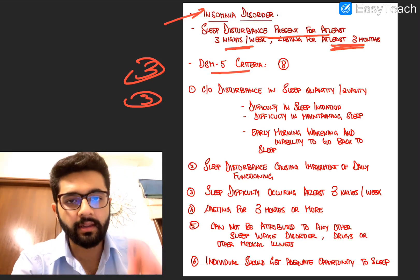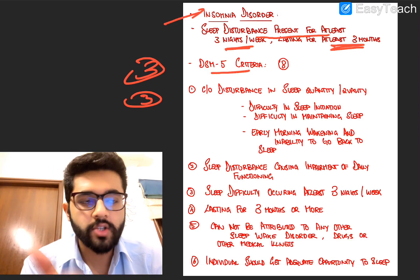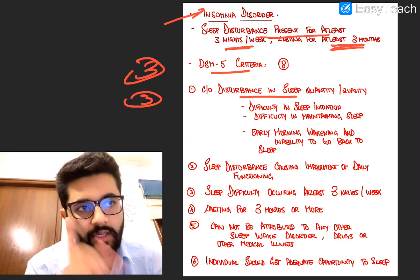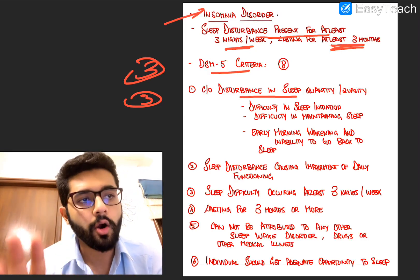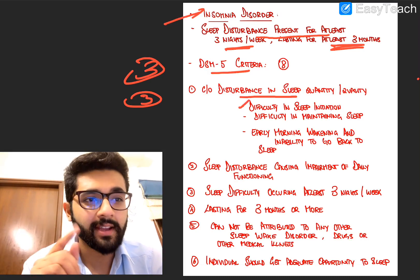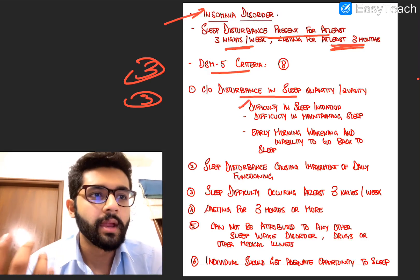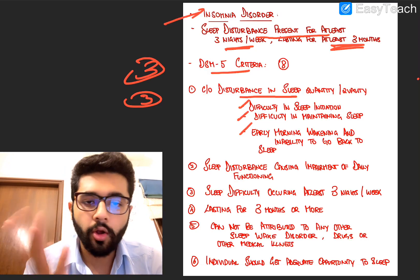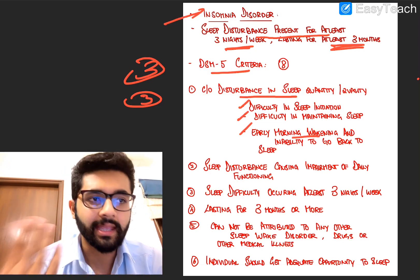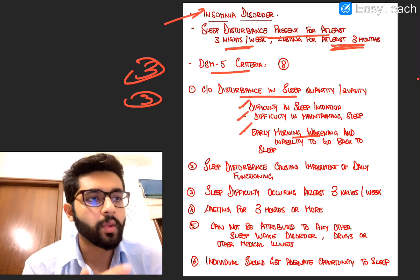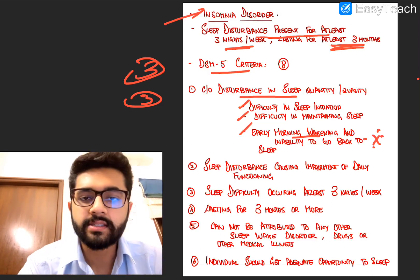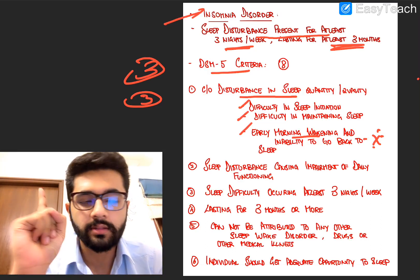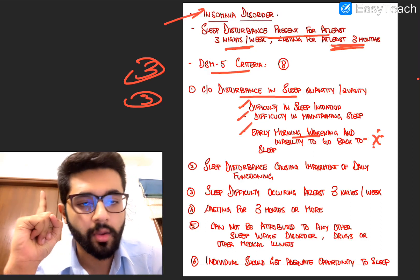Let's talk about the DSM-5 criteria for insomnia disorder in more detail — there are eight criteria. Firstly, there should be complaints of disturbance of sleep either in quantity or quality, or both. It can present as difficulty in initiating sleep, difficulty in maintaining sleep — where they sleep and wake up repeatedly — or early morning awakening with inability to sleep again, which is also seen in depression. Any or all of these three can be present.